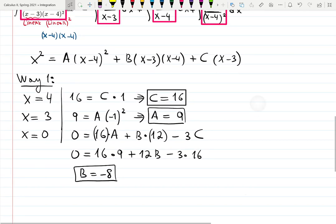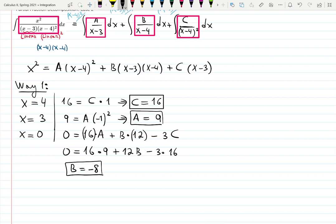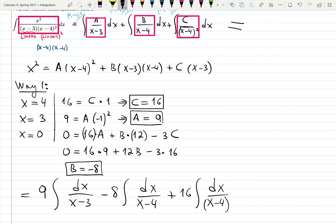And this completes our integration. It's going to be integral. A is 9, and I like doing this. 9 kicks out outside. dx over x minus 3. B is minus 8. dx over x minus 4. And C is 16, dx over x minus 4 squared.